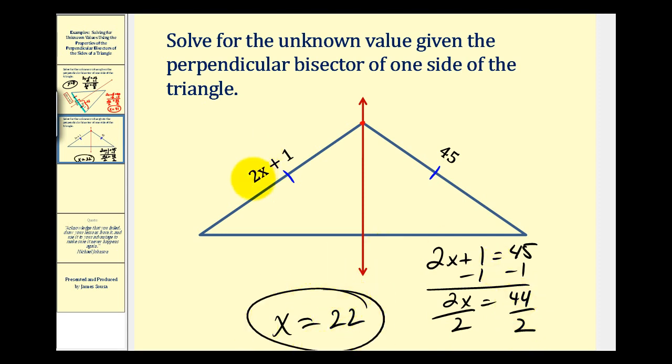And we can go ahead and check this. 2 times 22 is 44 plus 1 equals 45, which checks because we know these two sides have the same length. And that'll do it for this video. I hope you found these two examples helpful.